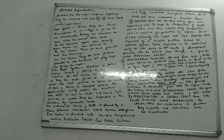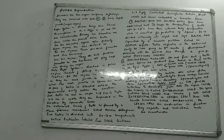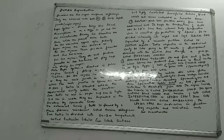Each testis is divided into 200 to 300 compartments known as testicular lobules. Each lobule contains 1 to 3 highly coiled seminiferous tubules. It also contains blood vessels, and both the tubules and blood vessels are enclosed in loose connective tissue.